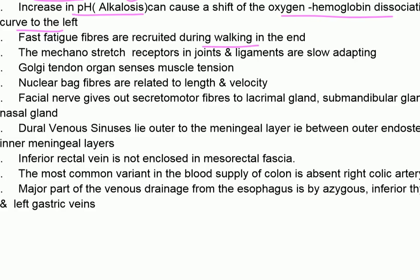Fast fatigue fibers are recruited during walking at the end. Mechanostretch receptors in joints and ligaments are slow adapting. Golgi tendon organ senses muscle tension. Nuclear bag fibers are related to length and velocity.